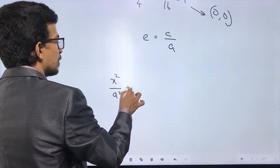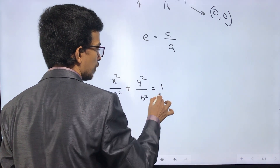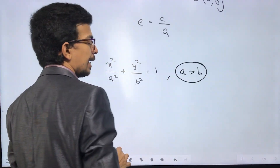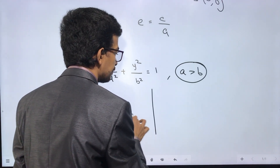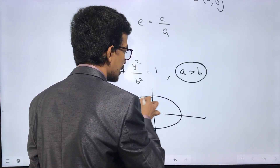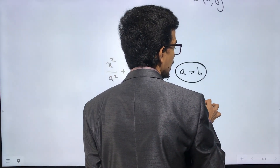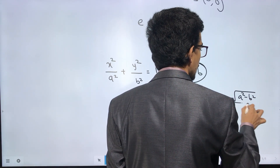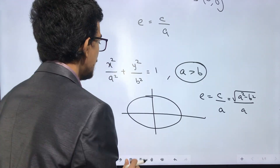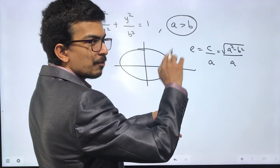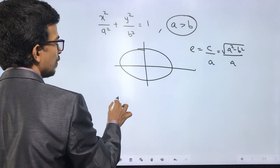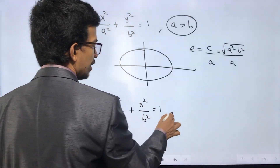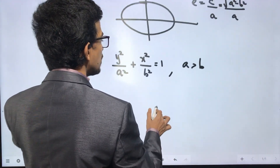The standard ellipse form is x squared by a squared plus y squared by b squared equals 1. For this ellipse, a is greater than b. The eccentricity formula is e equals c divided by a, where c equals the square root of (a squared minus b squared) divided by a.